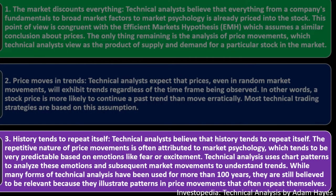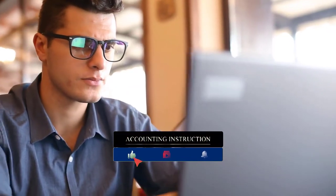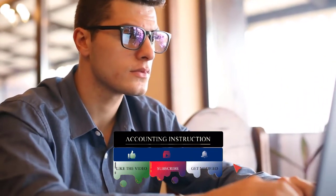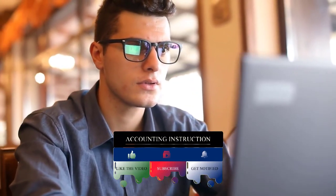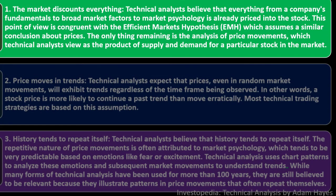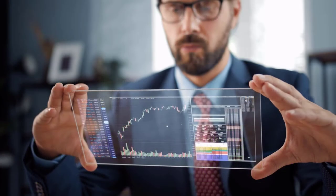Third, history tends to repeat itself. Technical analysts believe the repetitive nature of price movement is often attributed to market psychology, which tends to be very predictable based on emotions like fear or excitement. Technical analysts use chart patterns to analyze these emotions and subsequent market movements to understand trends. It's interesting that if markets are impacted by emotion, they may not always be valued completely correctly, since emotions can drive us outside of rational valuation.